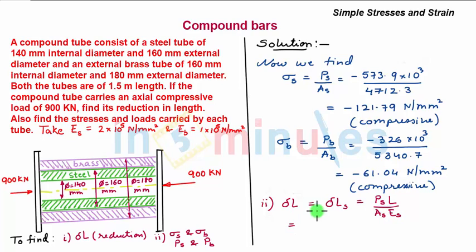Upon substituting the values, we get PS equals 573 times 10 to the power 3 Newtons. Length is given as 1500 mm, so 1.5 meters equals 1500 mm over AS, which is 4712.3, multiplied by ES, which is 2 times 10 to the power 5 Newtons per mm squared. Delta L comes out to minus 0.913 mm. The negative sign indicates contraction or reduction in length.